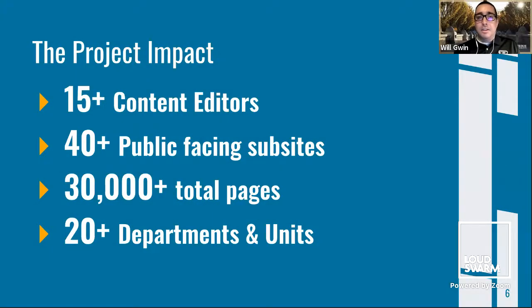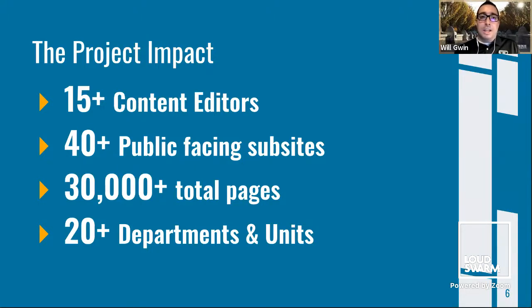Looking at the numbers behind this entire project: the Purdue College of Engineering really is a mini university in and of itself — it's massive. When you look at all of our sites, we only had 15 content editors, which isn't a lot when you consider we have more than 40 public-facing subsites. There's a lot of content sharing, a lot of individuals managing multiple sites. Those sites consist of over 30,000 pages, really spanning about 25 departments and units, plus a slew of research labs and faculty websites.